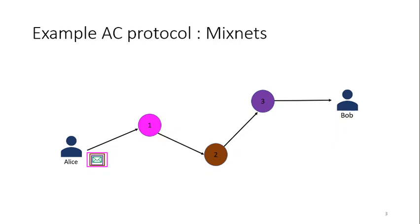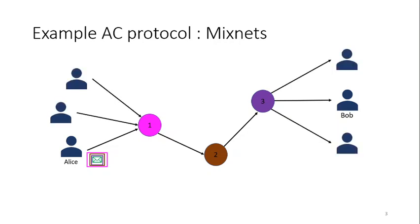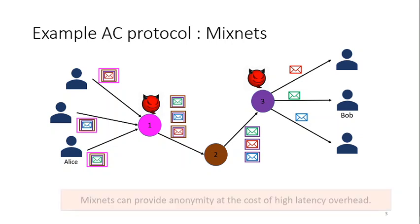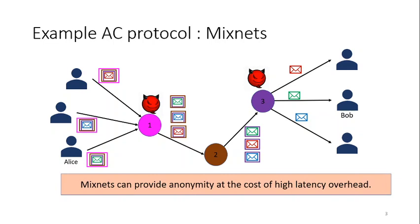Routing node 1 waits for a threshold number of messages, and after receiving that threshold number, it forwards the messages to node 2. Node 2 does the same, and node 3 forwards the final messages to the intended recipients. As long as there is at least one honest node, Alice can achieve anonymity. However, this comes with the cost of latency overhead — in terms of the time node 1 waits to receive the threshold number of messages, and the number of hops Alice's message takes to reach Bob.